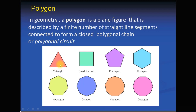In a triangle there are three line segments, and these three line segments are connected to form a closed polygonal chain or polygonal circuit. A quadrilateral — meaning a square or rectangle — has four sides, so this is also a polygon. In this polygon there are four line segments connected to form a closed polygonal chain.